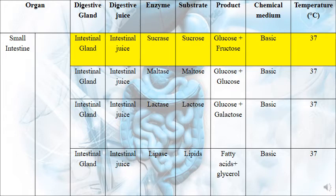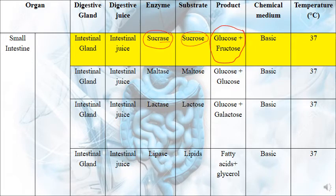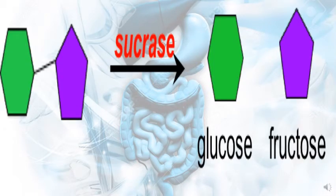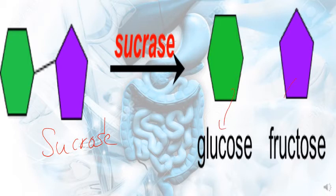Now at the level of the small intestine, the intestinal gland secretes intestinal juice. This juice contains an enzyme called sucrase — it ends in '-ase' so it's an enzyme. Sucrase works on sucrose to give glucose and fructose. The medium is basic with a pH greater than 7 and the temperature is 37 degrees Celsius. Glucose is represented by the green molecule and fructose by the violet one.